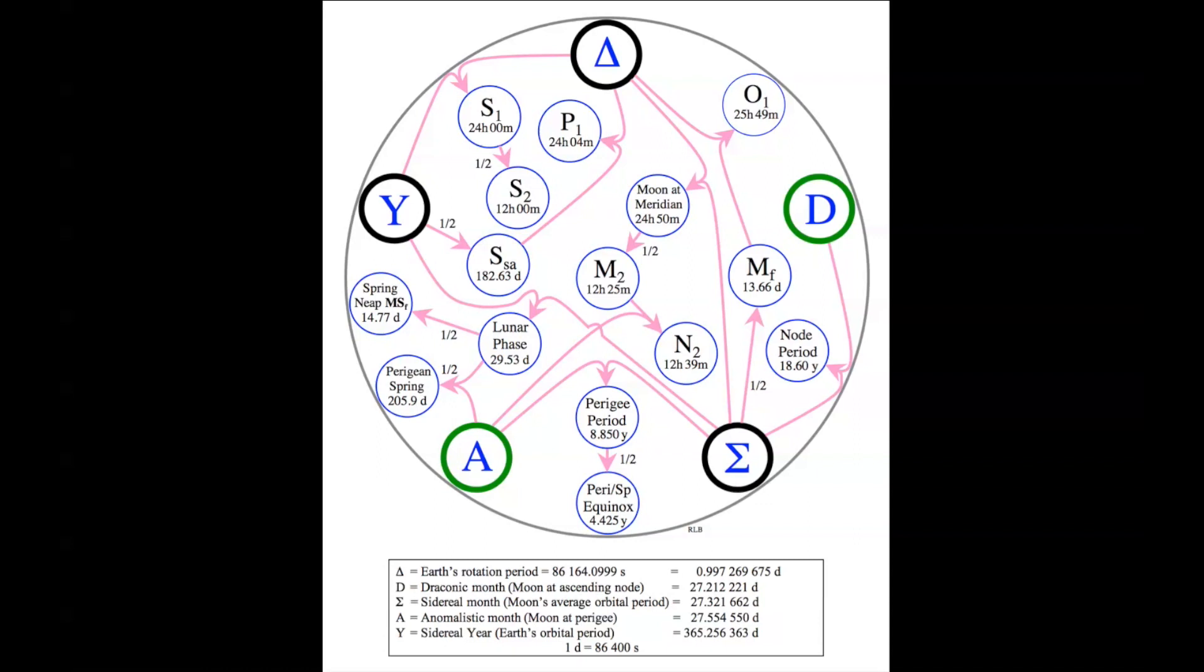If you take the year here, the orbital year, and the moon's orbit time, product over the difference, that generates the lunar phase period of 29.53 days. And if you pair that up with the anomalistic month, that gives you the period between perigee and spring tides, 205.9 days. I'd like to go through all these things and talk about them, but I won't. But it's a neat diagram because it summarizes all these interacting frequencies.